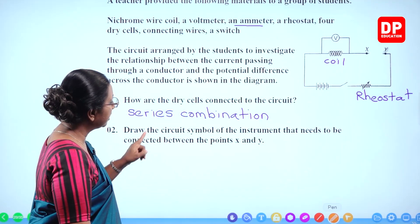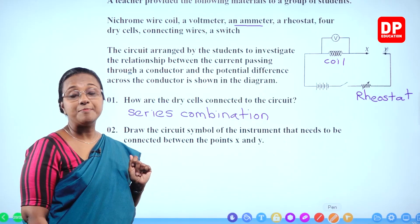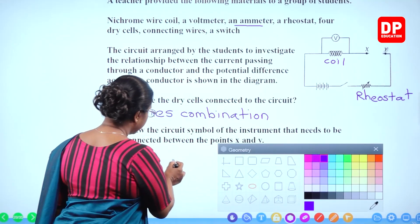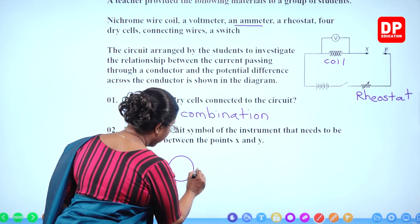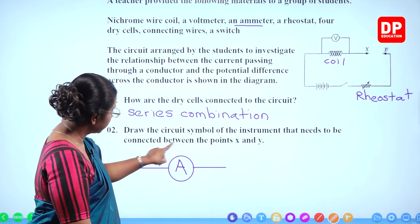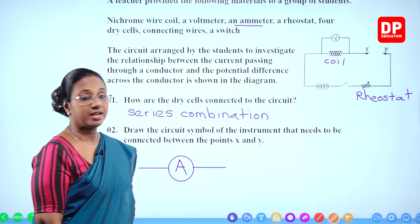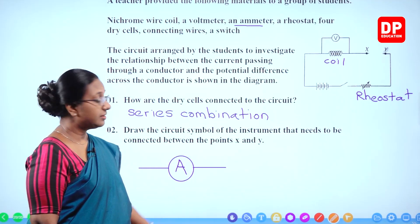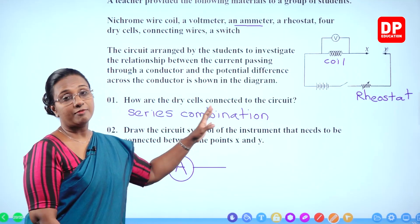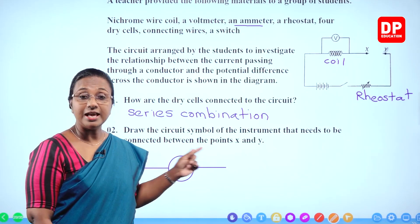Second question: draw the circuit symbol of the instrument that needs to be connected between points X and Y. That instrument is the ammeter, used to measure current flow. The circuit symbol is a circle with the capital letter A inside it. You can draw it separately in the space provided rather than on the circuit diagram itself.